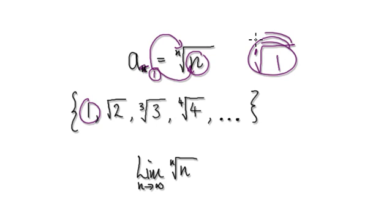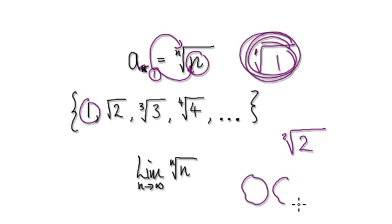By the way, what does this even mean? Well, if you have square root of, let's say, square root of 2, it would mean that a number multiplied by itself would give you the number 2. So that's what the square root means.